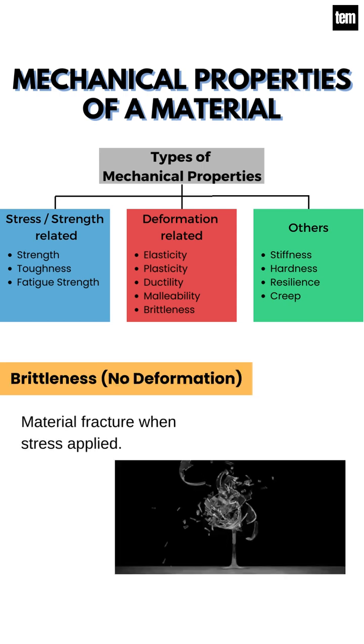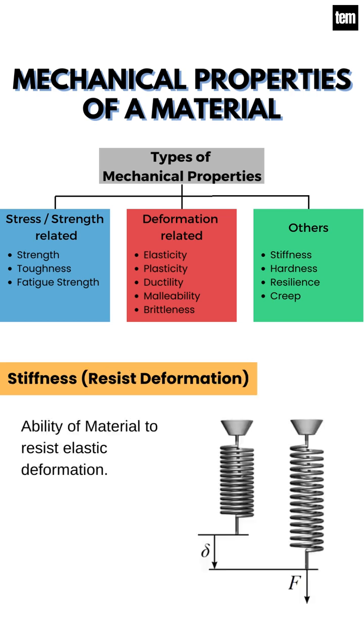Brittleness: material fractures when stress is applied. Stiffness: ability of a material to resist elastic deformation.